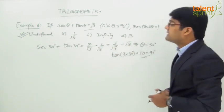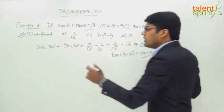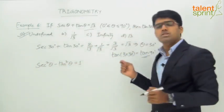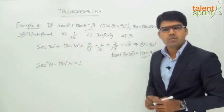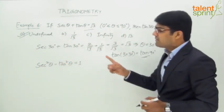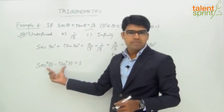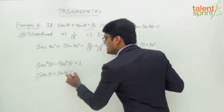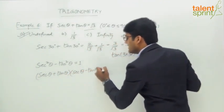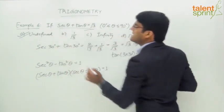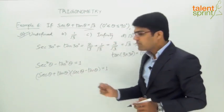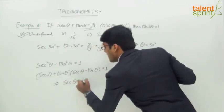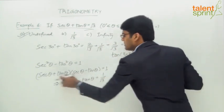Now let's see the regular method. We use the trigonometric identity: sec²θ − tan²θ = 1. This factors as (sec θ + tan θ)(sec θ − tan θ) = 1. We already know sec θ + tan θ = √3 from the given equation. Substituting: √3 × (sec θ − tan θ) = 1, so sec θ − tan θ = 1/√3.